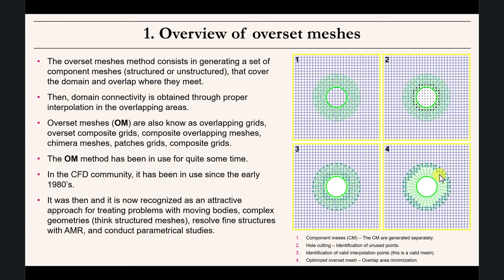Basically, overset meshes consist in generating a set of meshes — a group of meshes — and then putting them together. It doesn't matter the type of mesh; it can be structured or unstructured. The only requirement is that they need to be generated independently and then assembled. The algorithm will then compute what is called a chimera hole, erase those cells, and create an interpolation fringe.